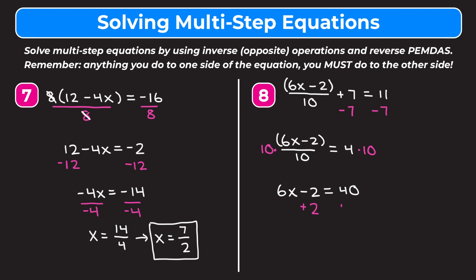We add 2 to both sides to get rid of the minus 2. On the left we're left with 6x. On the right we get 42. Our last step is to divide both sides by 6, and we end up with x equals 7 as our final answer.